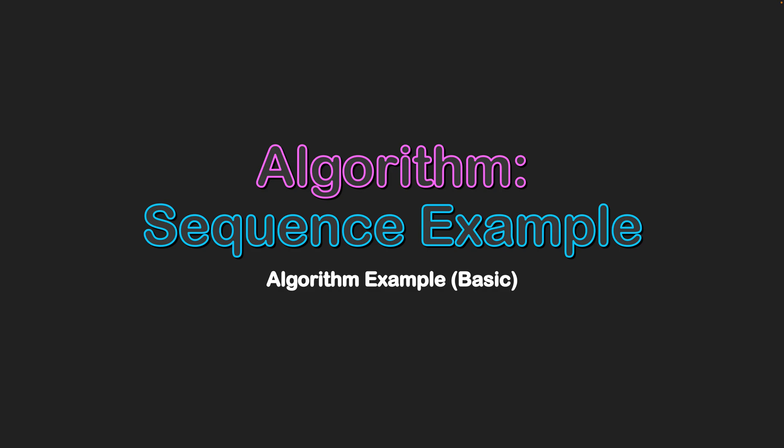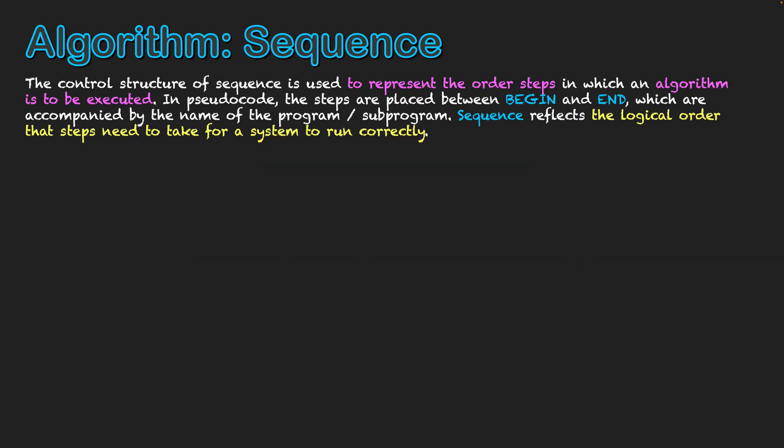The control structure of sequence is used to represent the order of steps in which an algorithm is to be executed. In pseudocode, the steps are placed between the keywords BEGIN and END, which are accompanied by the name of the program or subprogram. Sequence reflects the logical order that steps need to take for a system to run correctly.